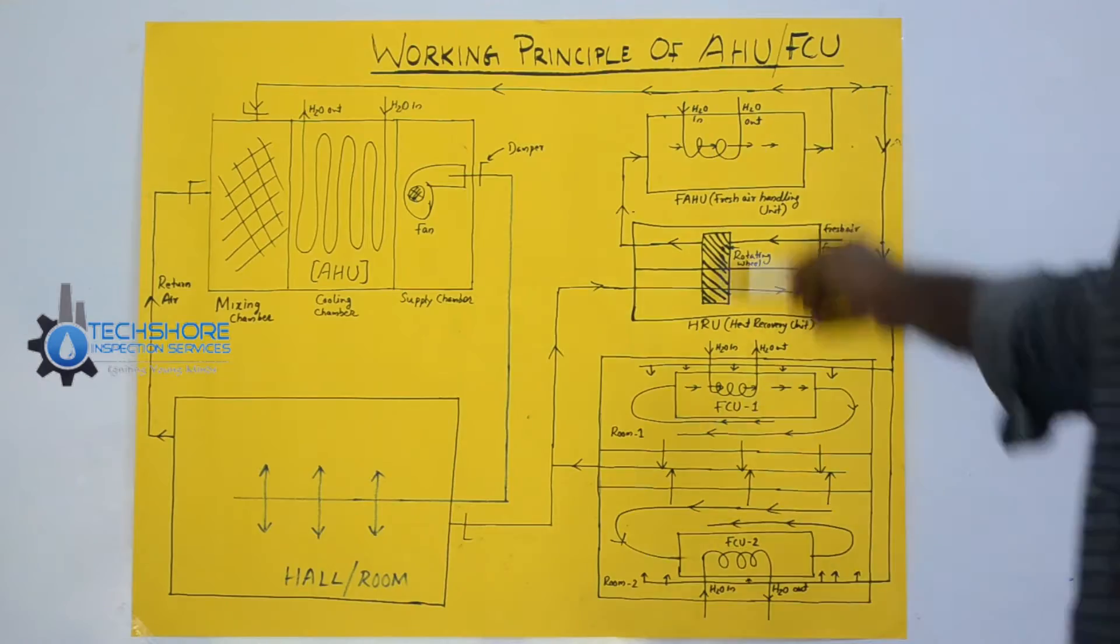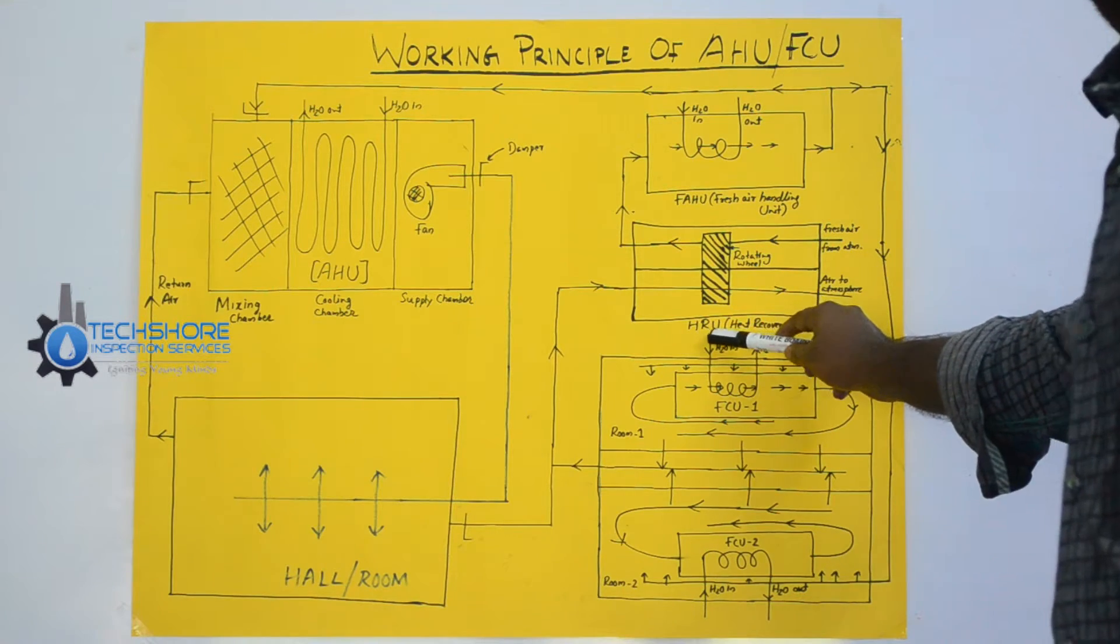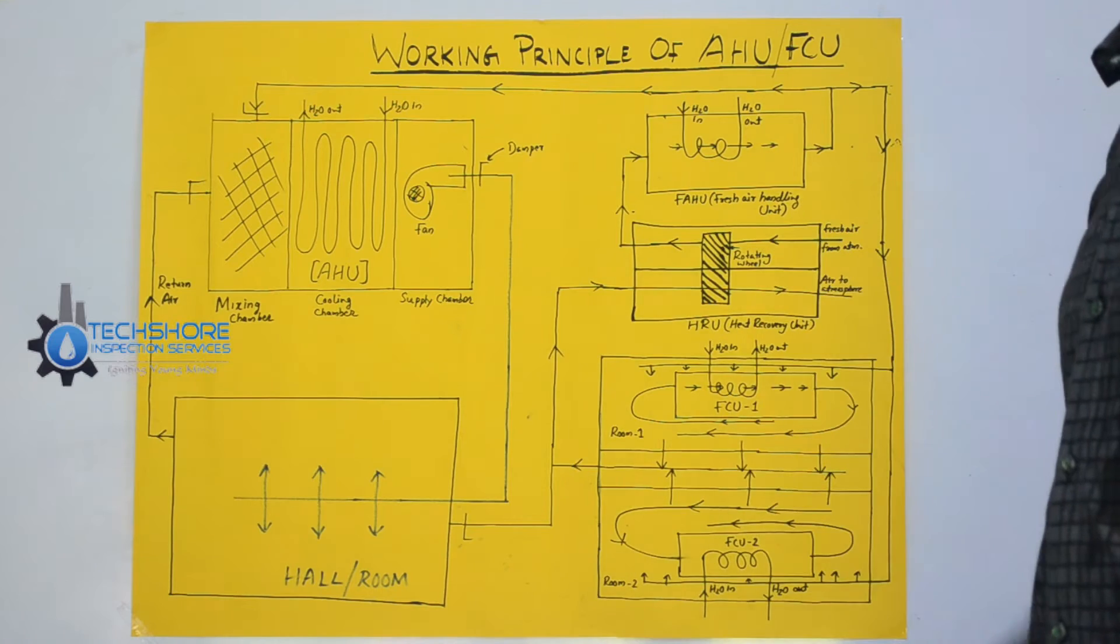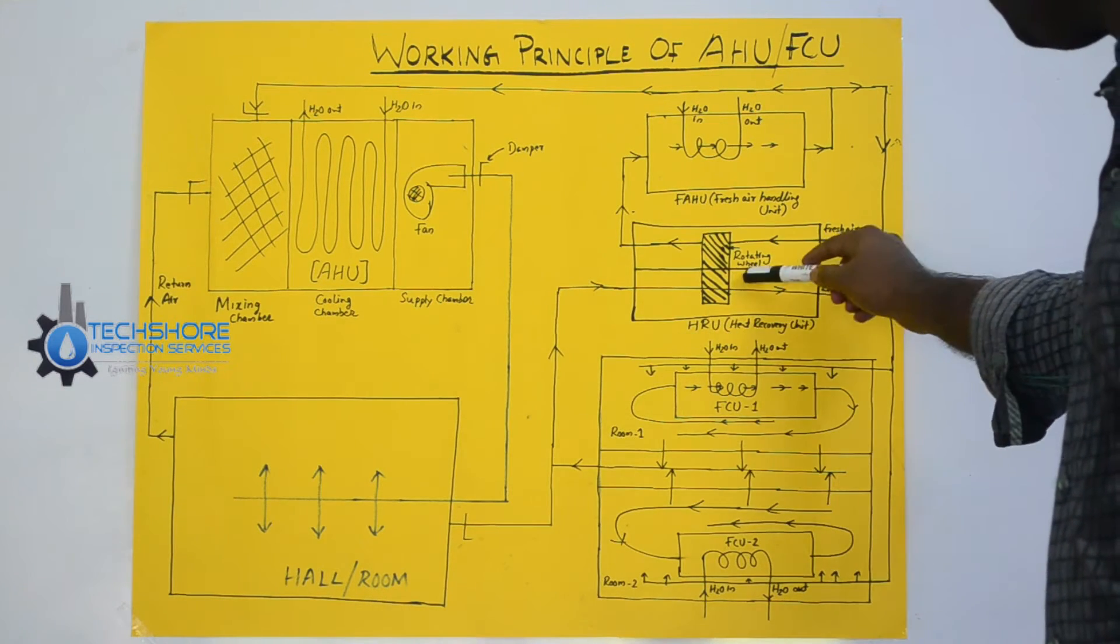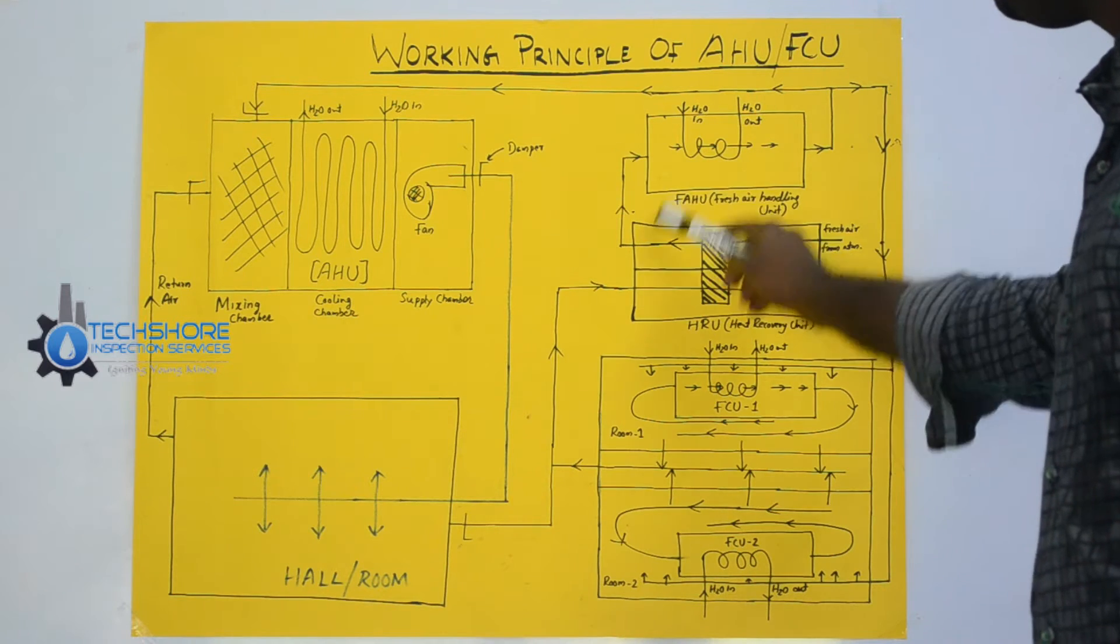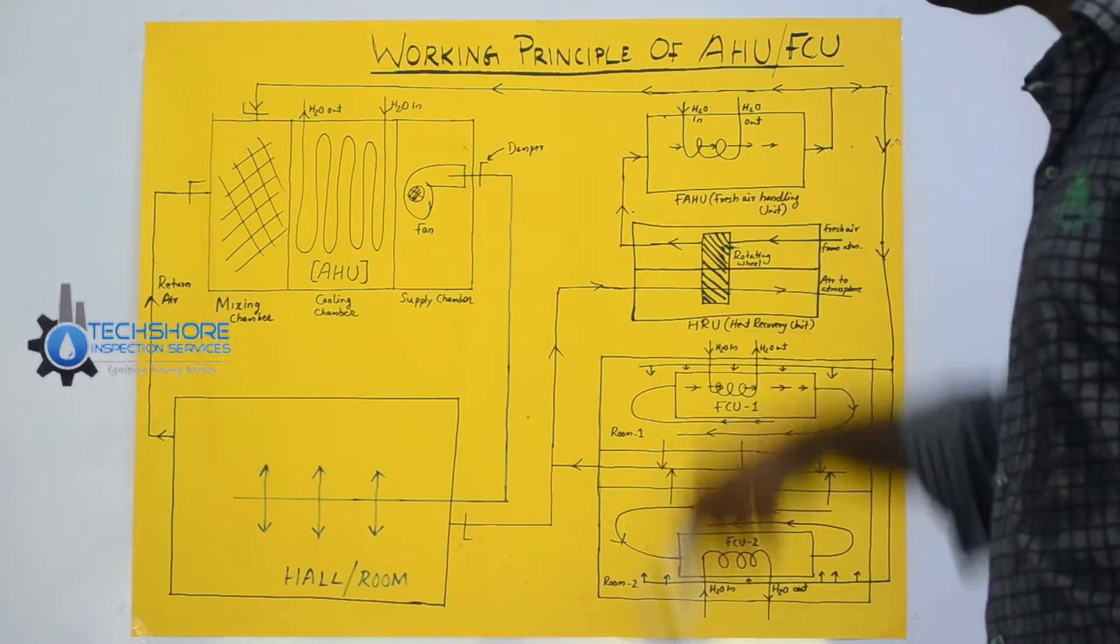Same way, atmospheric air is taken from this, here it is an HRU, heat recovery unit. This is a rotating wheel. I will explain you later. This is the fresh air from here and it is a fresh air handling unit, FAH. That is also the part of this chiller.